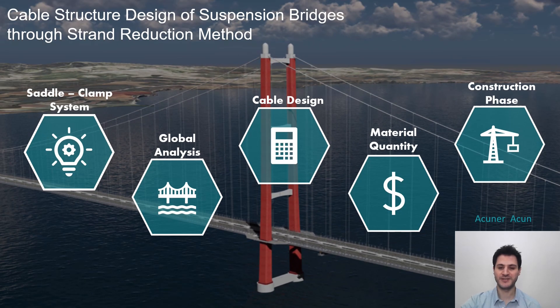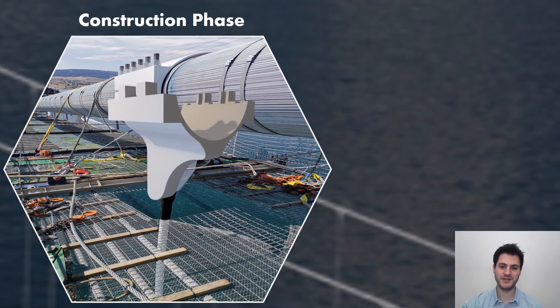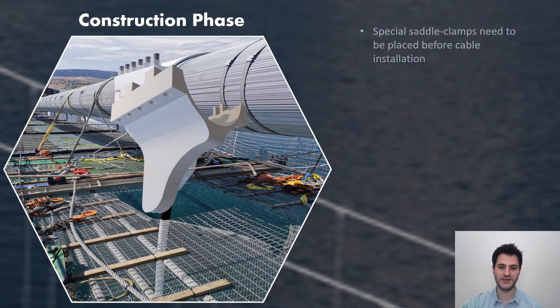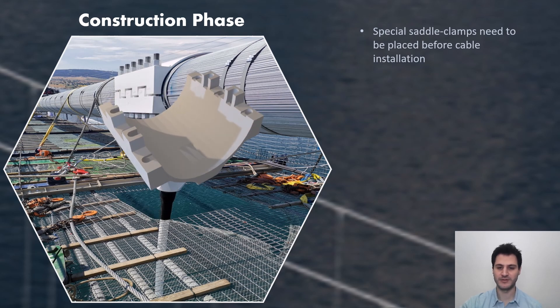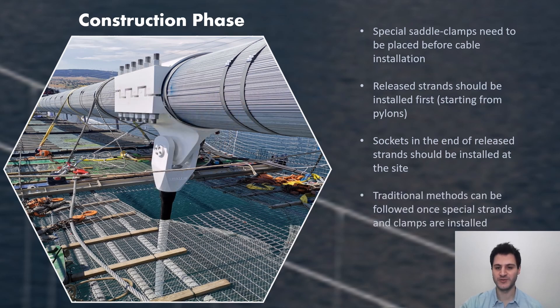Finally, let's move on and discuss construction phase. This photo was taken on the site after the installation of typical clamps. For saddle clamp system, special clamps need to be there before the strands of main cable. They can be placed on the catwalk mesh. Then, strands that will be released at some point need to be installed starting from pylons. Saddle clamp system does not require sockets and pins at the top, but they are needed at the bottom end of hanger cable. So, sockets at the end of strands should be installed at the site. Finally, for the rest of continuous strands and typical clamps, traditional methods can be followed.